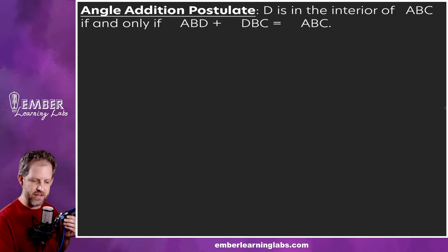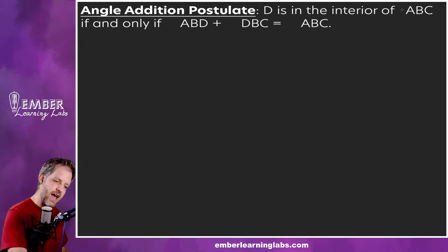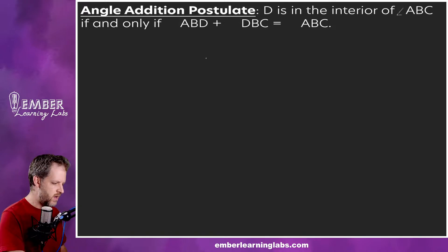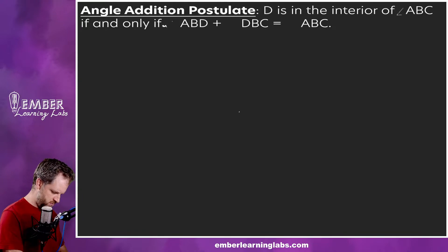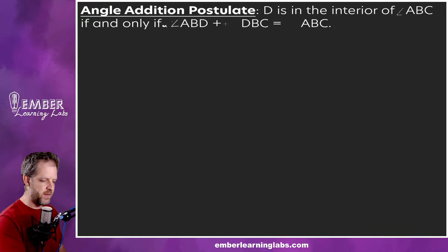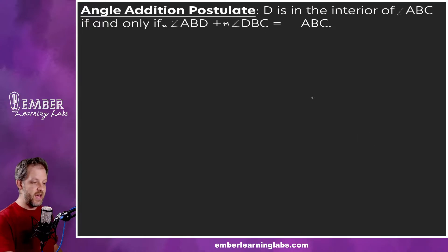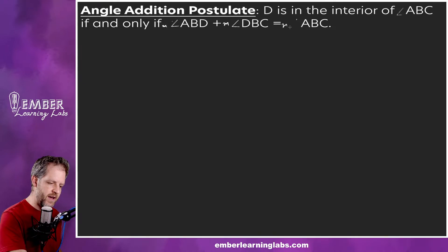There's a lot to add in on this particular lesson. D is in the interior of angle ABC if and only if the measure of angle ABD plus the measure of angle DBC equals the measure of angle ABC.